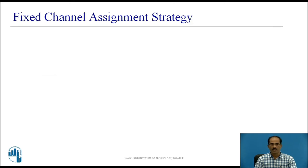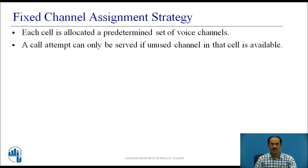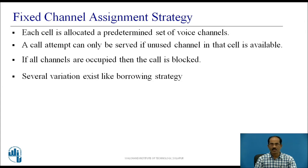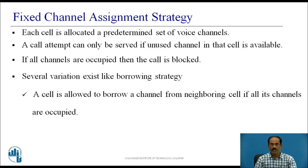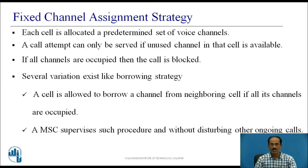In Fixed Channel Assignment (FCA) Strategy, each cell is allocated a pre-defined set of voice channels. A call attempt can only be served if an unused channel in that cell is available. If all channels are occupied, the call is blocked. A variation allows borrowing a free channel from a neighboring cell if all its channels are occupied by mobile stations. The MSC supervises such procedures without disturbing other ongoing calls.